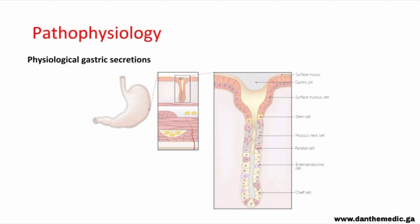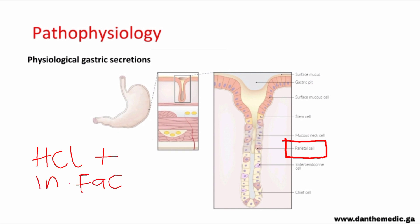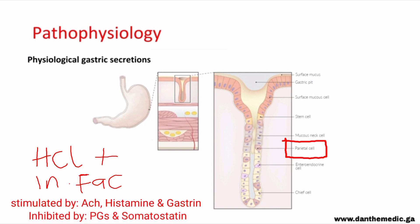Now let's look at the pathophysiology, starting with the normal physiological process. Under physiological conditions, the cells that produce hydrochloric acid in gastric juice are the parietal cells, which also secrete intrinsic factor. Parietal cells are stimulated by acetylcholine, histamine, and gastrin, and inhibited by prostaglandins and somatostatin.